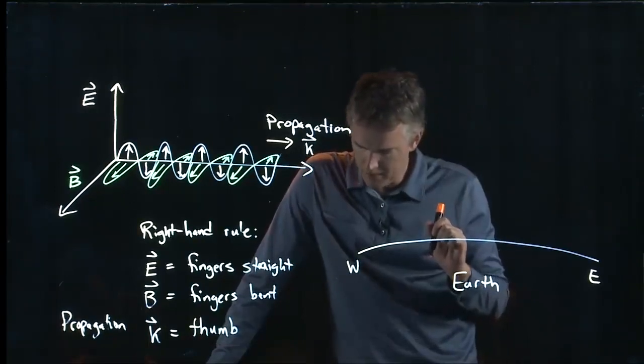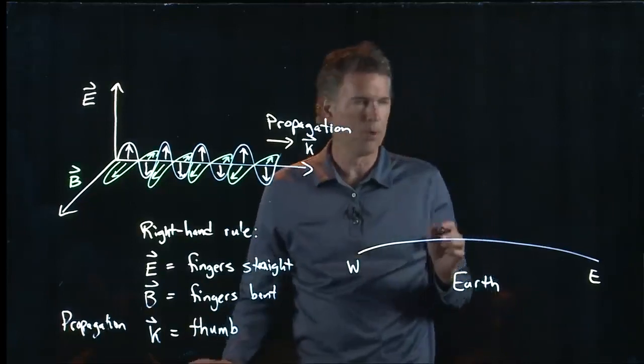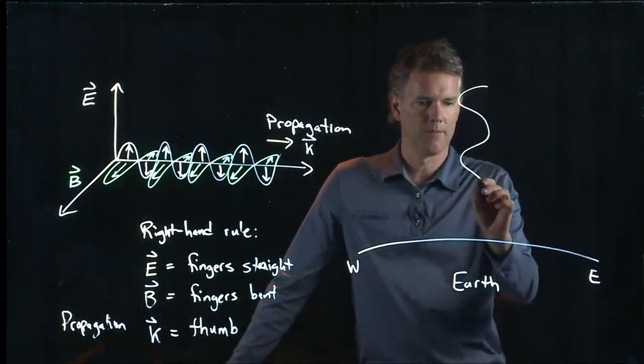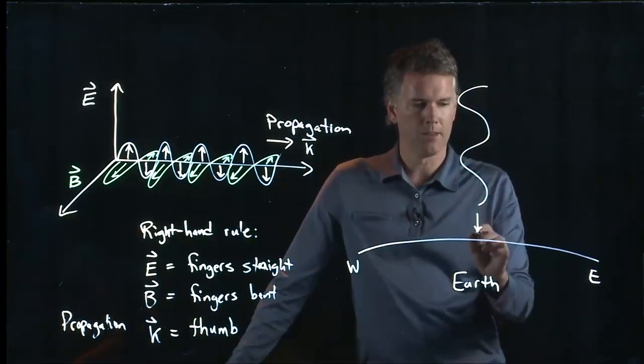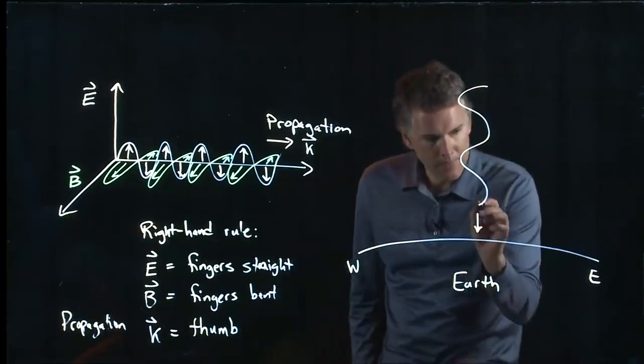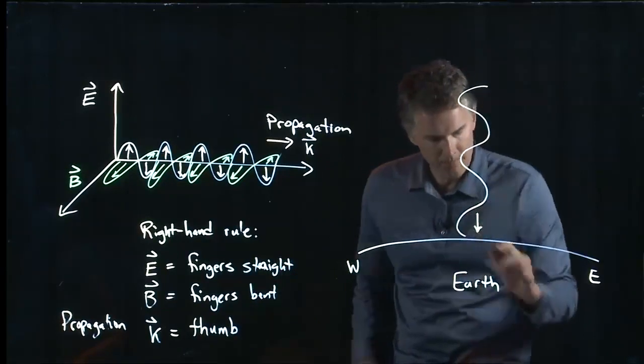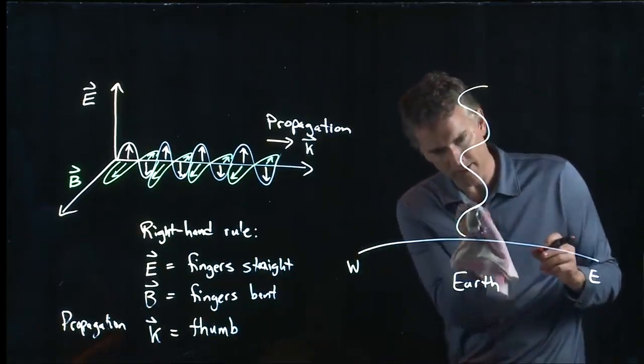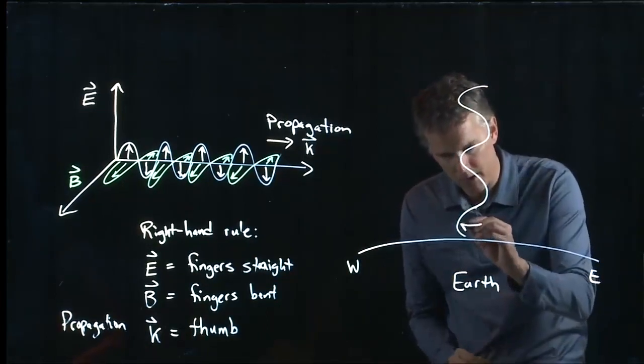And at a certain moment in time, the electric field points west. So here comes our wave. It is propagating this way. And at this moment in time, the electric field is pointing to the west. So there is our electric field.